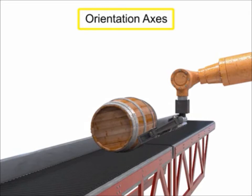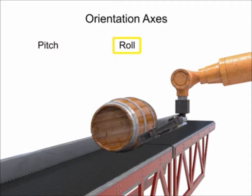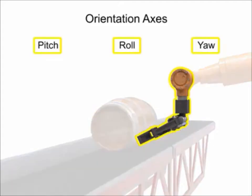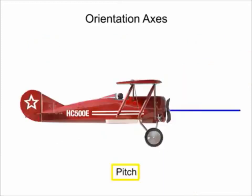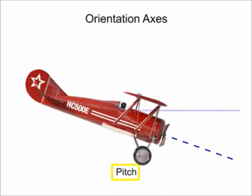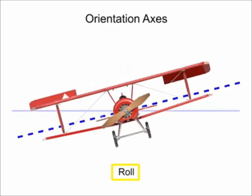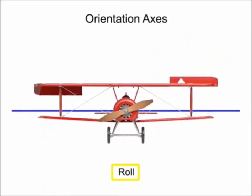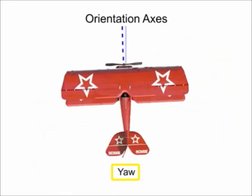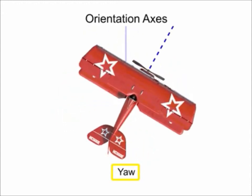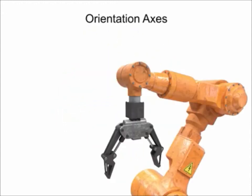The types of movement along orientation axes are defined as pitch, roll and yaw. These movements all occur from the same joint, the wrist, but along three distinct axes. This type of movement is most easily illustrated as it relates to aircraft movement. The robot's tool moves in the same way.